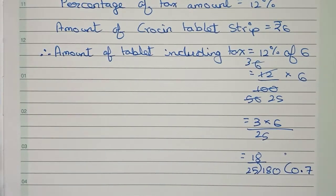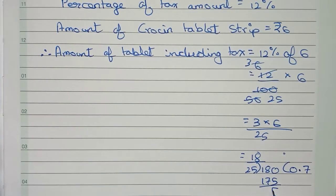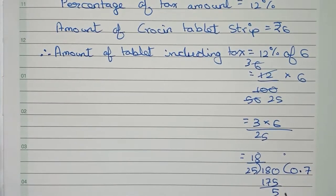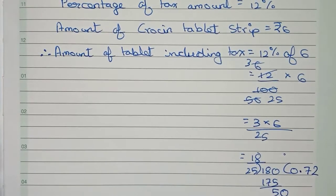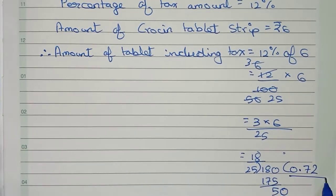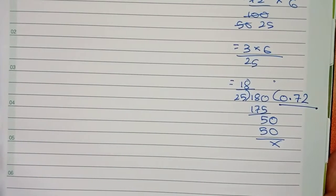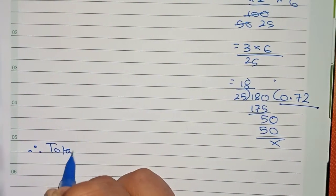Now I cut by 7. 25, 7, 7, it will become 175. Now 5 remainder. So again give one zero and write. Now it will be divided by 2, so 250. Therefore the amount of tax is 0.72.